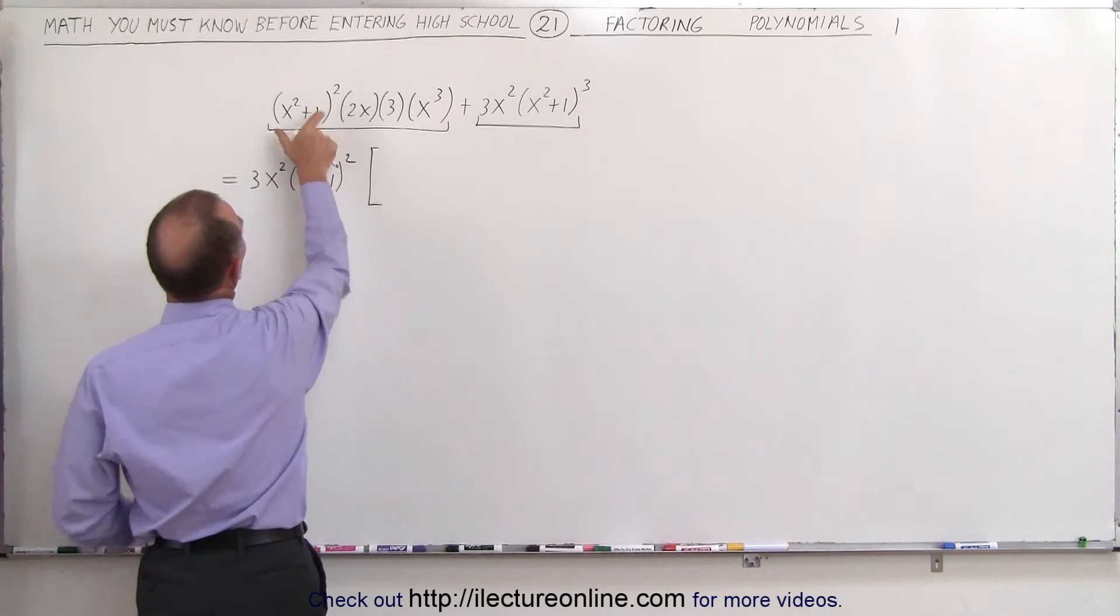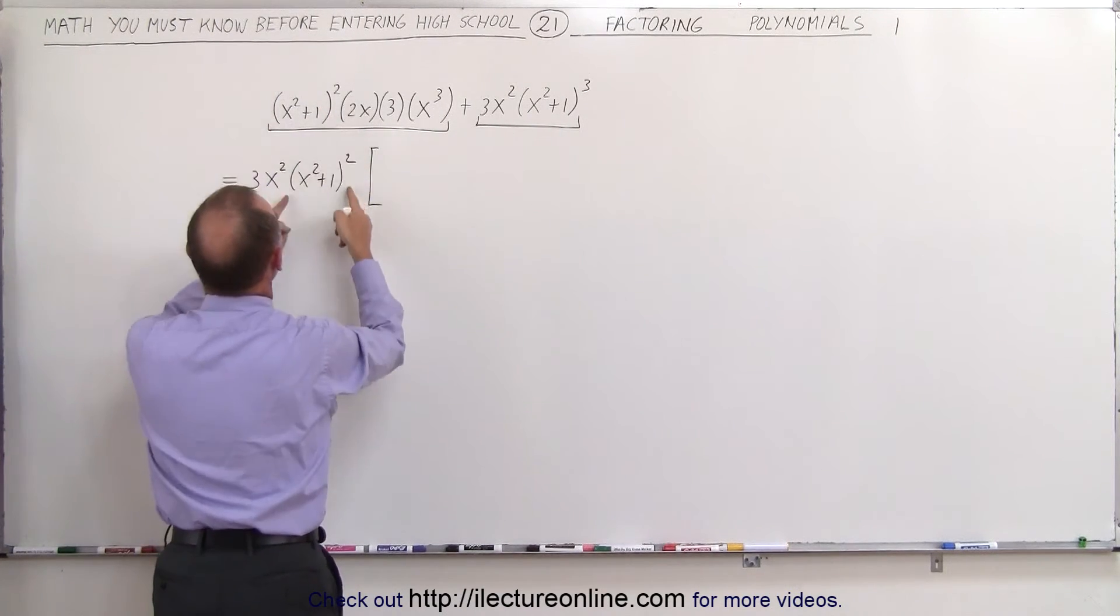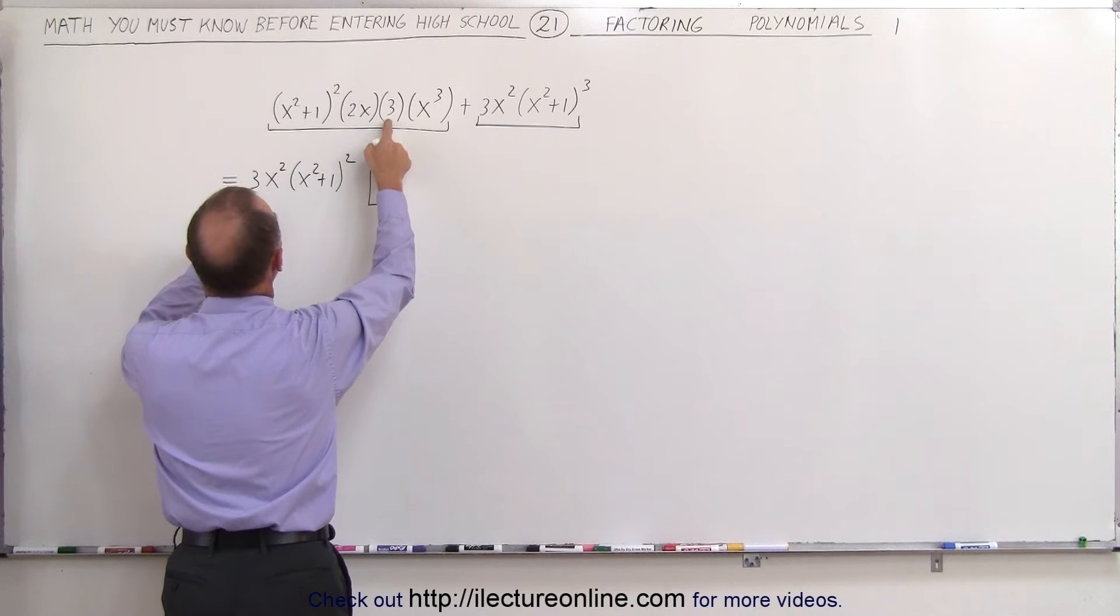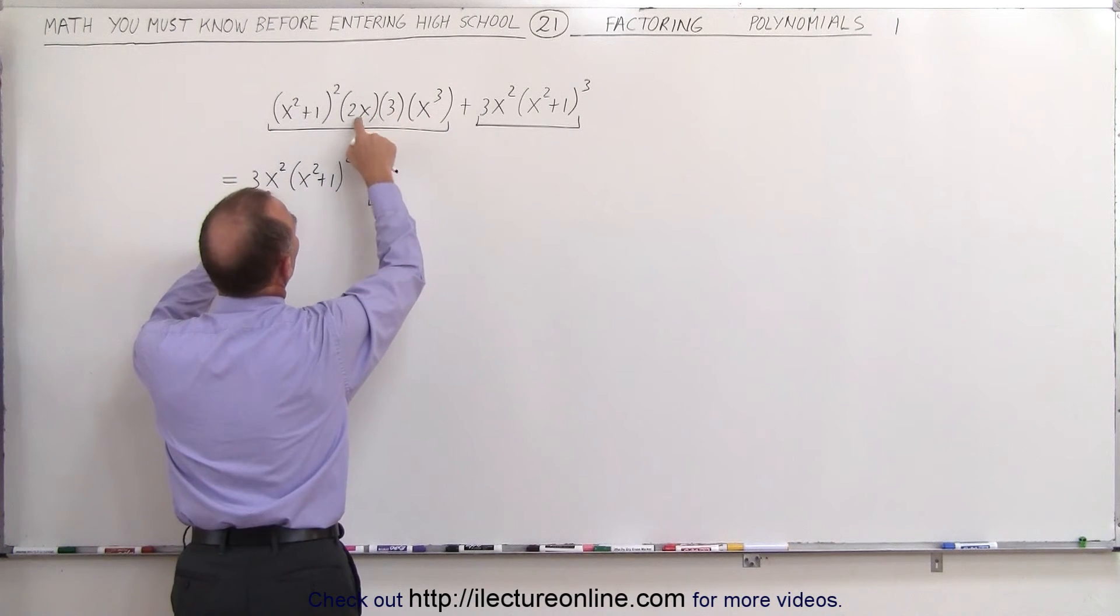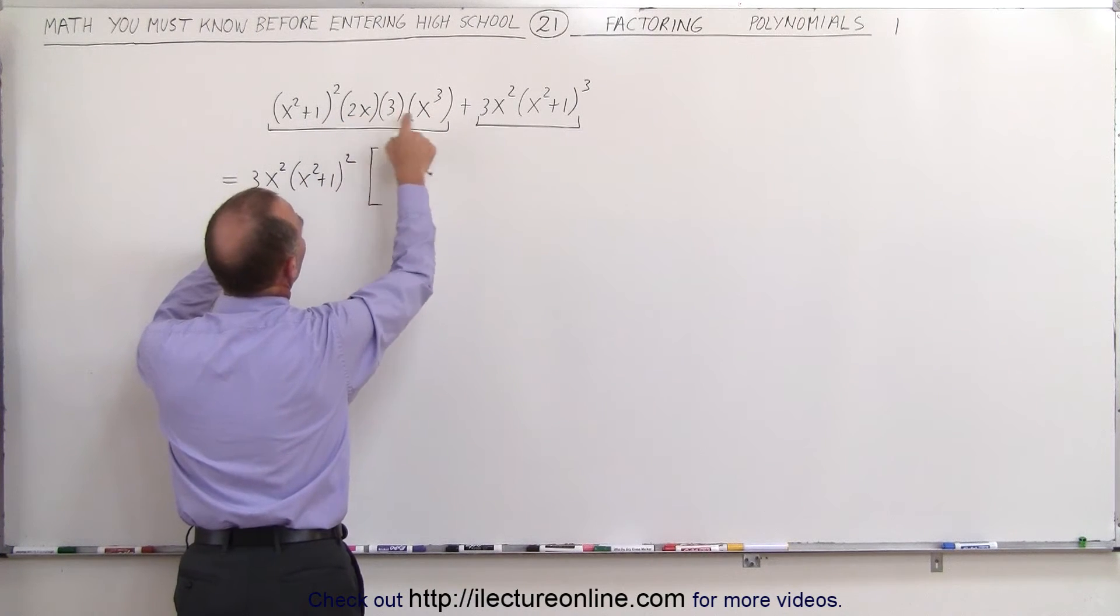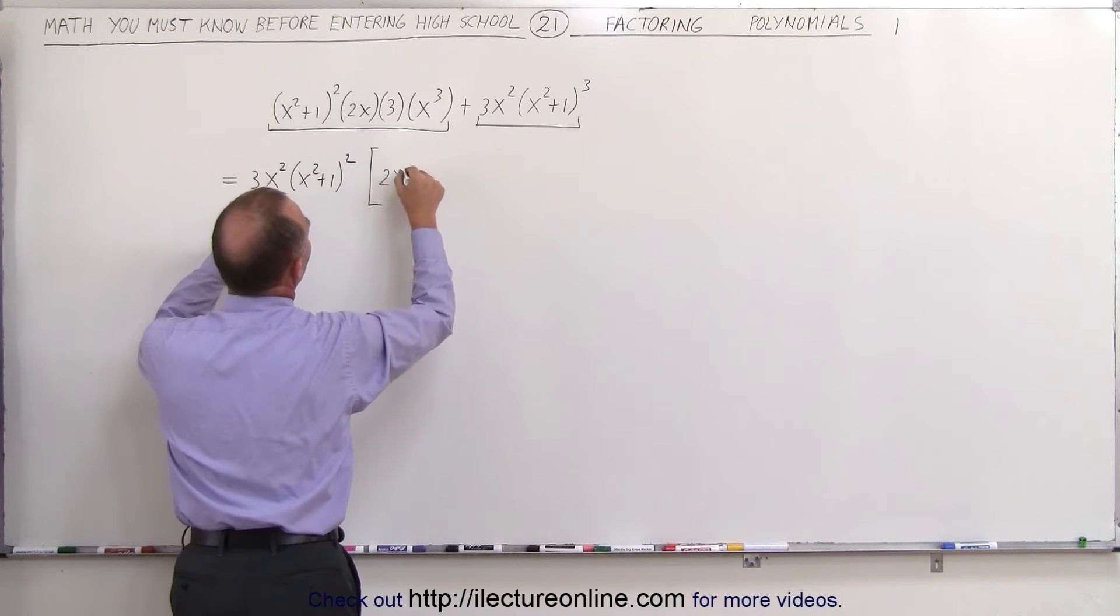Over here we realize that this is now gone because we factored it out. The 3 is gone because we factored it out and the x squared is gone. So we're left with an x here and a 2x there. So 2x times x gives us a 2x squared.